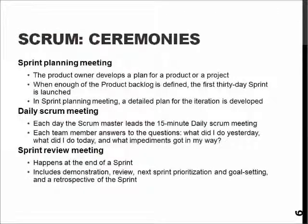The ceremonies are more or less just new names for different things in other models. The sprint planning meeting is a meeting where the product owner develops a plan for the project to happen, usually done for each iteration, because 30 days is a relatively long period of time if you don't know what you are doing. The daily Scrum meeting is just 15 minutes so that everyone knows what other people are doing, and the review meeting shows us where we are now and what we have to do next to stay on the overall course of the entire product development.